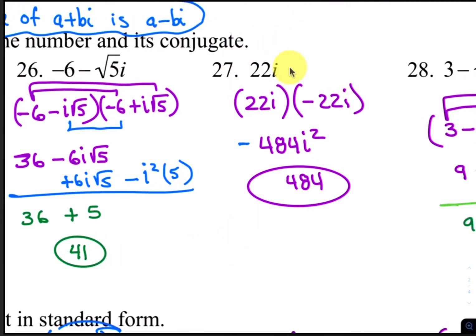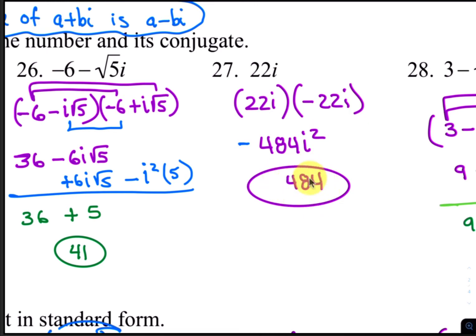The conjugate of 22i is negative 22i. So 22i times negative 22i is negative 484i squared, which then becomes positive 484.